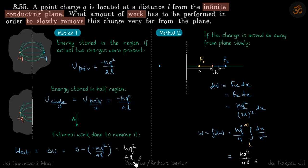Now second is a more standard way. We are still going to use the image method, but we'll move it slowly dx at a time. So the charge is moved dx away from the plane slowly. At any moment, the electric force will be towards left because the negative charge is introduced here.